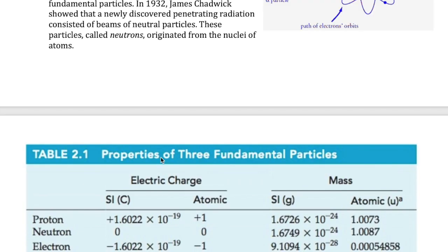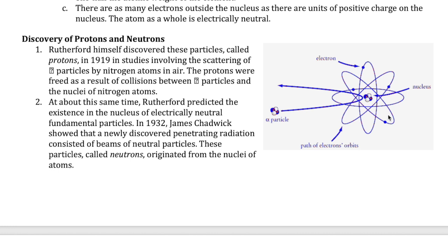In the previous model we talked about, which is the Rutherford model, the electrons are really just particles that spin around the nucleus, like the planets orbiting the sun.